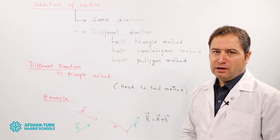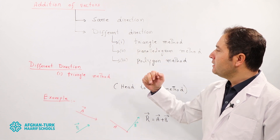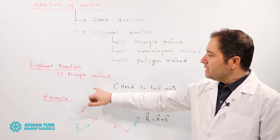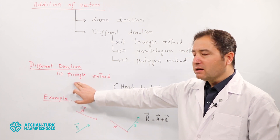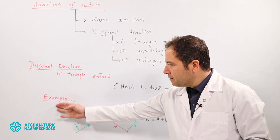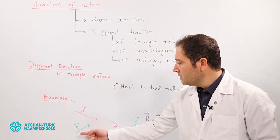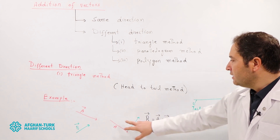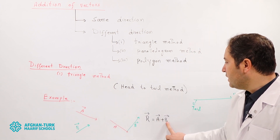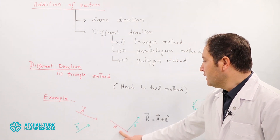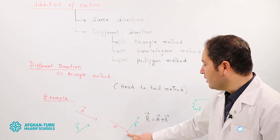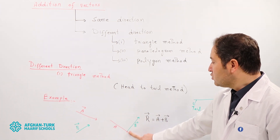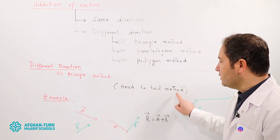Now we discuss different direction vectors, starting with the triangle method. The triangle method is also called the head-to-tail method. Similar to the same-direction case, we form a triangle from the vectors. If we add vector A plus vector B, we place vector A first, then join the head of the first vector to the tail of the second vector — that is why this method is called the head-to-tail method.